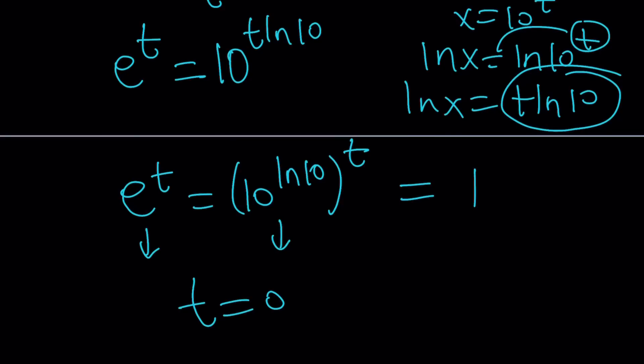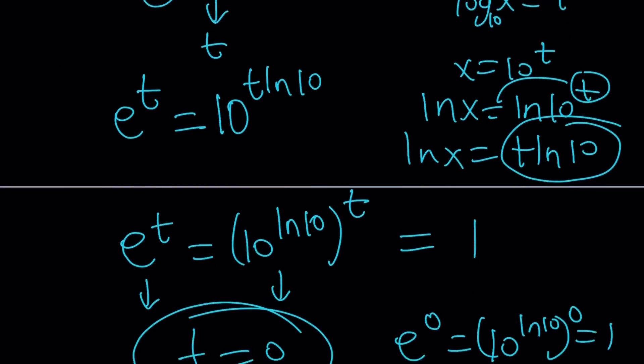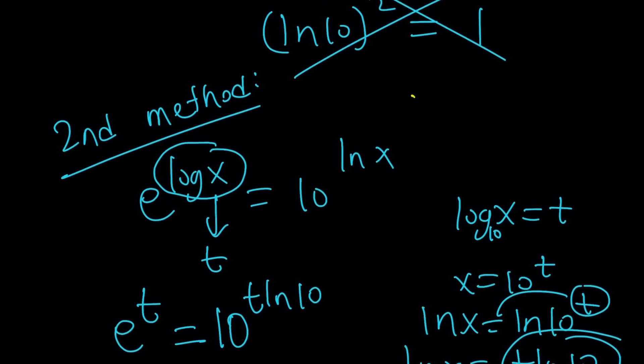Wait a minute, what is that supposed to mean? e to the power 0 is the same as 10 to the power ln 10 to the power 0 because they're both equal to 1. Make sense? It should make sense, hopefully. But we're not looking for t. Where does t come from? Who brought the t? I didn't. Well, maybe I brought some coffee.